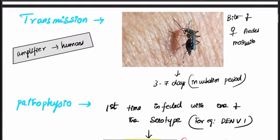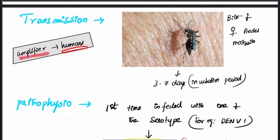Dengue is transmitted through the bite of the female Aedes mosquito. When the mosquito bites, it injects the virus into humans, and humans act as amplifiers. There is an incubation period for multiplication of the virus of around 3 to 7 days.